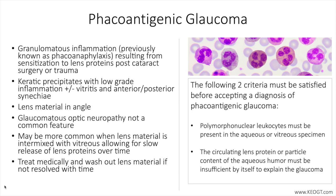The immune response usually occurs within two weeks of surgery or trauma and involves an immune complex reaction mediated by IgG and the complement system. Two criteria must be satisfied before definitively accepting a diagnosis of phacoantigenic glaucoma: number one, polymorphonuclear leukocytes must be present in the aqueous or vitreous specimen; and number two, circulating lens proteins or particle content of the aqueous humor must be insufficient by itself to explain the glaucoma.